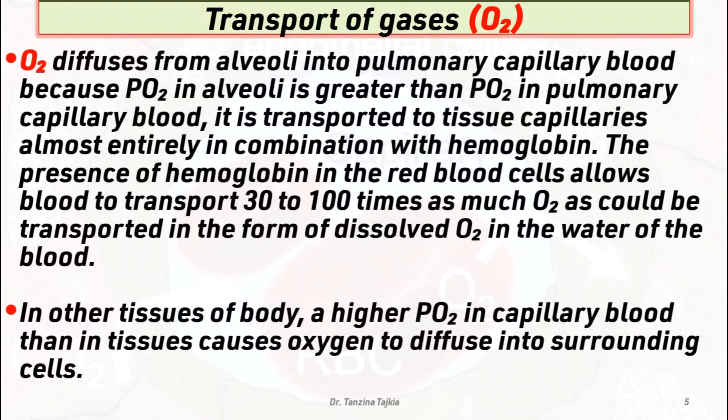Oxygen is transported to tissue capillaries almost entirely in combination with hemoglobin. The presence of hemoglobin in red blood cells allows blood to transport 30 to 100 times as much oxygen as could be transported in the form of dissolved oxygen in the water of blood. In other tissues of the body, a higher partial pressure of oxygen in capillary blood than in tissue causes oxygen to diffuse to the surrounding cells.